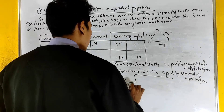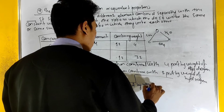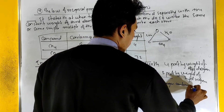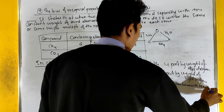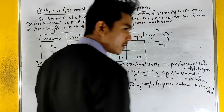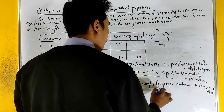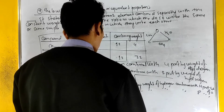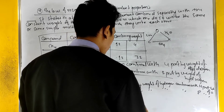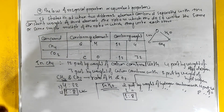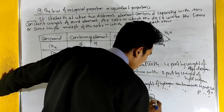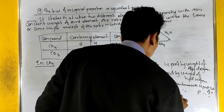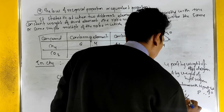Two parts by weight of hydrogen combine with 16 parts by weight of oxygen, and one part by weight of hydrogen combines with 8 parts by weight of oxygen. The ratio of hydrogen to oxygen — suppose the equation gives 1 to 2, so 1 divided by 8 is to 1 divided by 8.